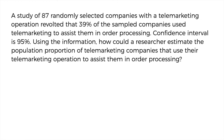Here is the example: a study of 87 randomly selected companies with telemarketing operations found that 39% of the sample companies use telemarketing to assist in order processing. The confidence interval is 95%. Using this information, estimate the population proportion of telemarketing companies that use their operations to assist in order processing.